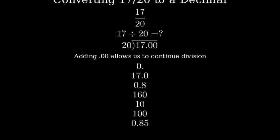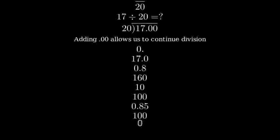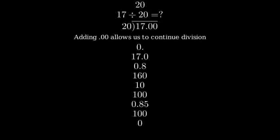20 goes into 100 five times because 5 times 20 is 100. Subtracting 100 from 100 leaves us with zero, meaning we're done.